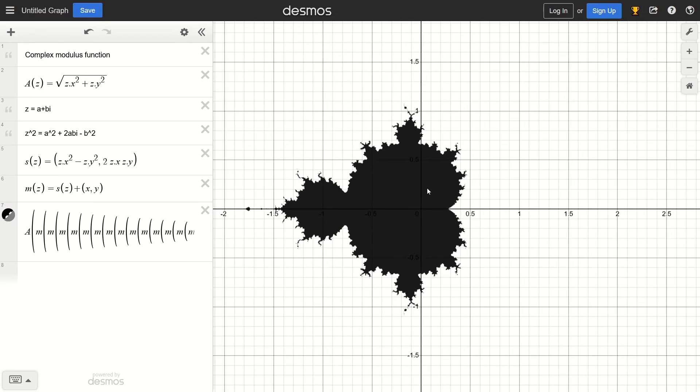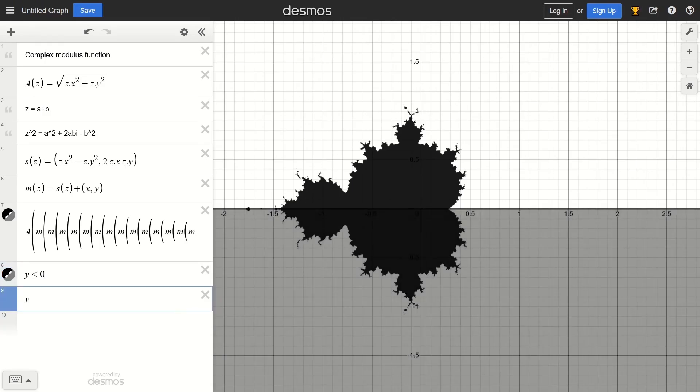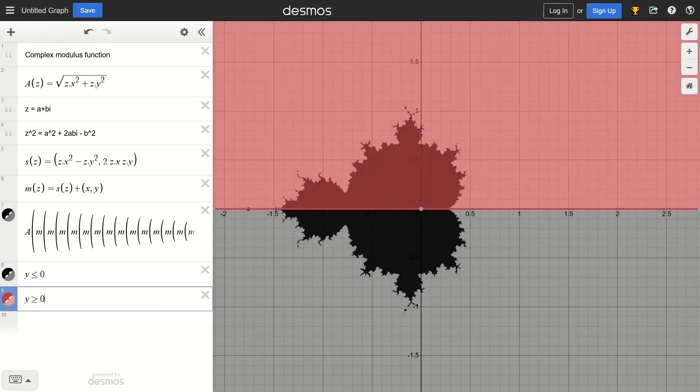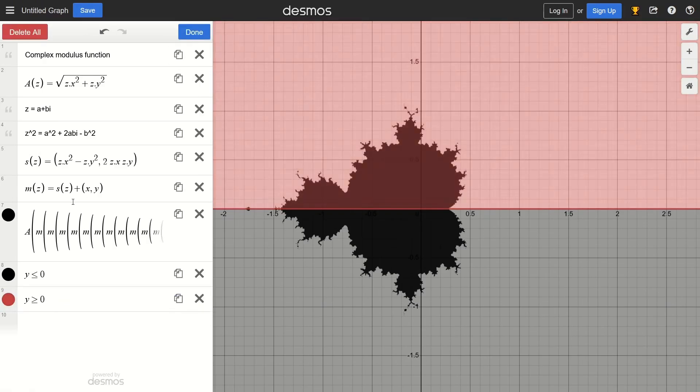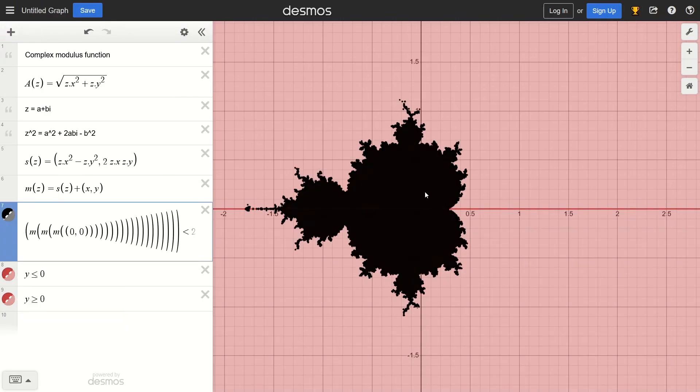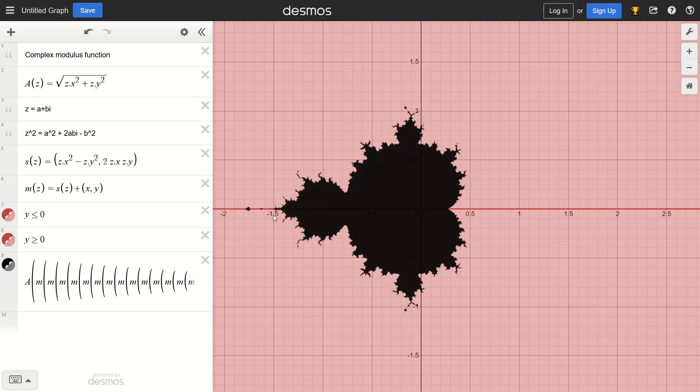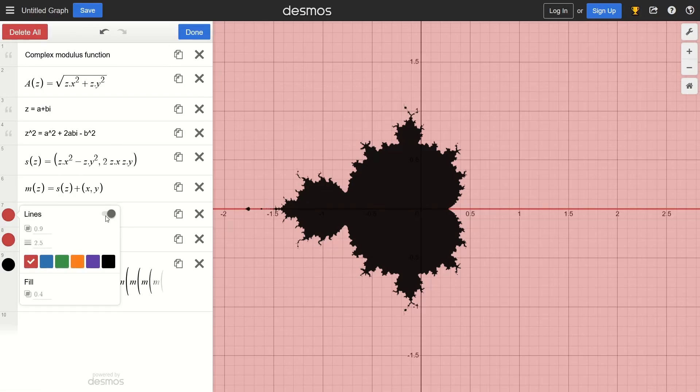One thing you can do is add a color for the background, so the way that I do this is I'll say y less than or equal to 0 to cover the bottom half, y more than or equal to 0 to cover the top half. Then I'll edit the colors, perhaps I want a red background so I'll change this to red. I want the Mandelbrot set to be colored on top so I'll move it below, and now there's this ugly line in the middle where y is equal to 0, we can remove that line as well by turning off this line option.